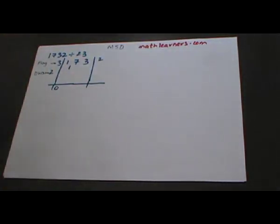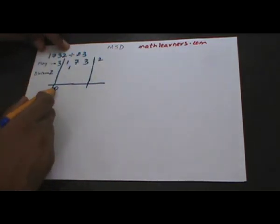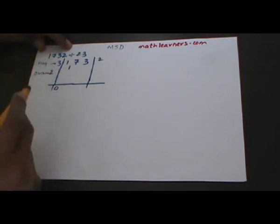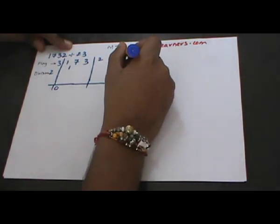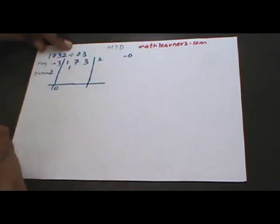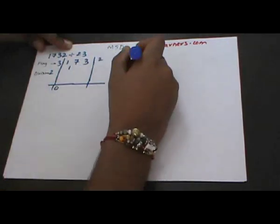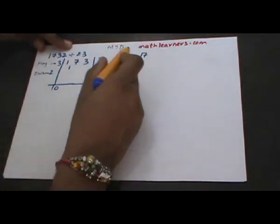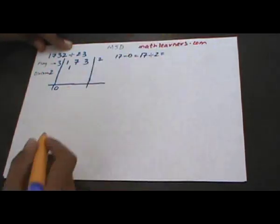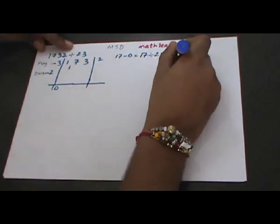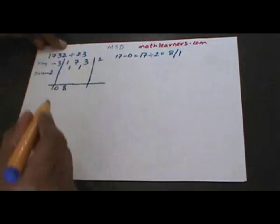We follow a series of MSD steps: M stands for multiplication, S for subtraction, and D for division. We multiply this 0 with our flag — 0 multiplied by 3 gives 0 — that will be subtracted from the combination of 1 and 7, that is 17. So that comes as 17. Now 17 will be divided by our divisor 2, giving quotient as 8 and remainder as 1. The quotient is written under the horizontal line and the remainder is written under 7 and 3.